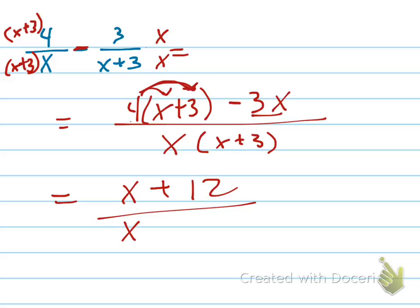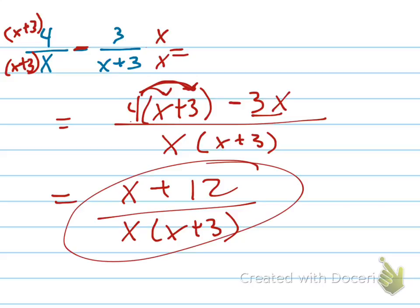All over x times x plus 3. You can't simplify that any further because there are no common factors in the numerator and the denominator. So there's your answer.